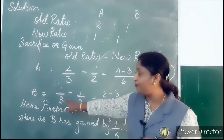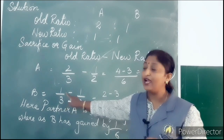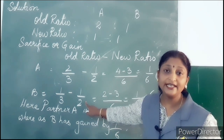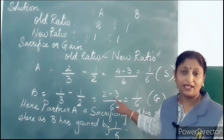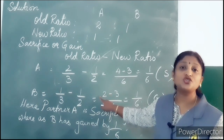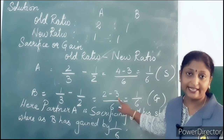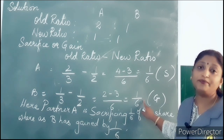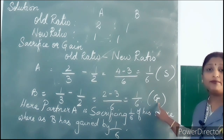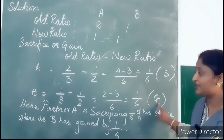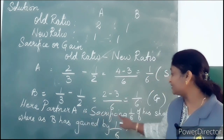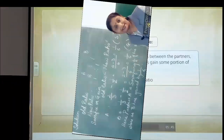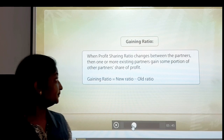So partner A is sacrificing 1/6 of the ratio. Now for partner B: B's old ratio is 1 by 3 and new ratio is 1 by 2. Multiplying the fractions with the LCM, the net effect is 2 minus 3, meaning B was getting 2 on 6 but will now get 3 on 6. The difference is negative 1 by 6, which means B is gaining by 1/6 of his share. So partner A is sacrificing 1/6 whereas partner B has gained by 1/6.